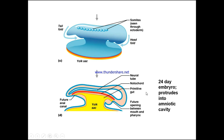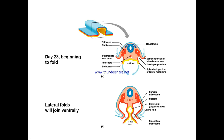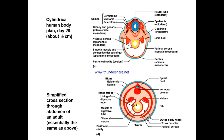All of this is starting to happen at this very important time. By day 23, we're continuing with this folding. We can see the ectoderm, somite, and neural tube forming; the notochord and endoderm continuing around into the midline; the somatic portion of the lateral mesoderm developing the coelom; and the splanchnic portion of the lateral mesoderm. Continuing through, we have the somatic mesoderm and coelom, and then the walls forming the future gut — the future digestive tube — and the splanchnic mesoderm.